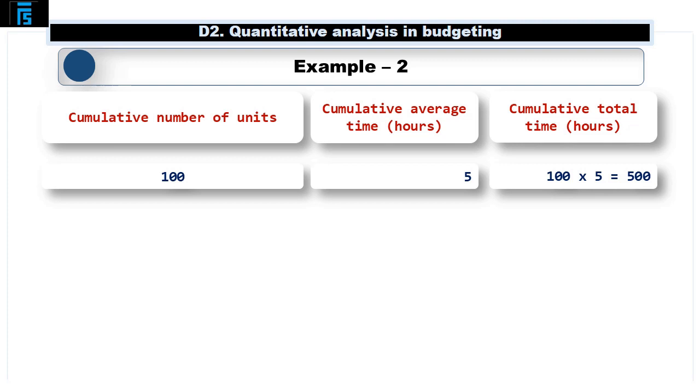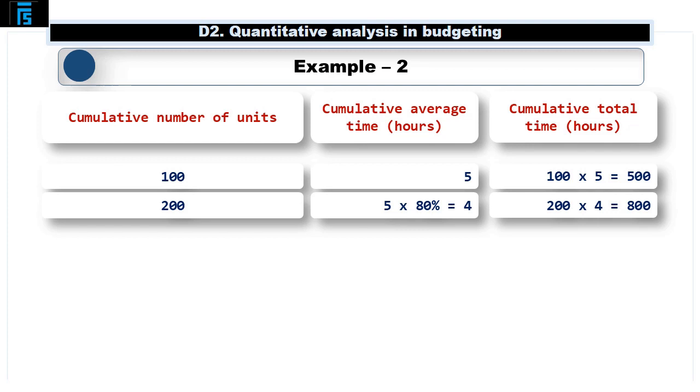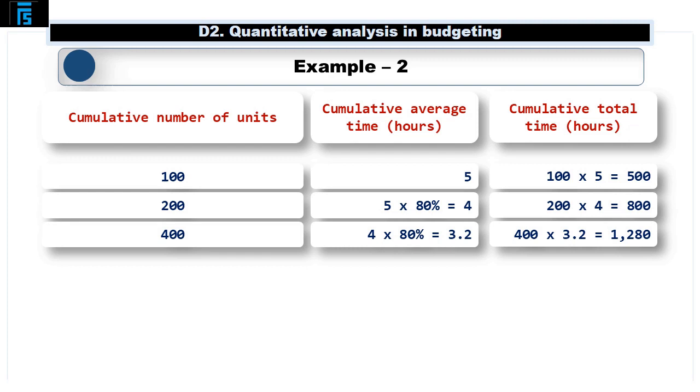We then need to double up the quantity being made to 200 units. As already discussed, these took a total of 800 hours, but let's break this down following the approach we need to use for the learning curve calculations. We know that the learning curve effect is 80%, so the cumulative average time taken to make a single unit can be calculated as 5 hours multiplied by 80%, giving 4 hours per unit, and hence the cumulative total time of 800 hours. If we double our quantity again, we can see this in action once more. So now we are making 400 units, and the cumulative average time will now be the 4 hours previously calculated for 200 units multiplied by 80%, giving 3.2 hours per unit. So to make 400 units, the total cumulative time will be 400 multiplied by 3.2 hours, a total of 1,280 hours.